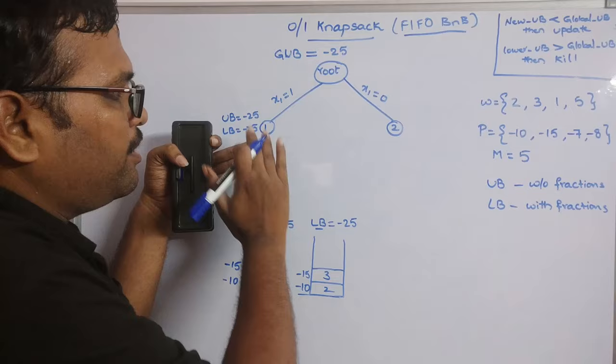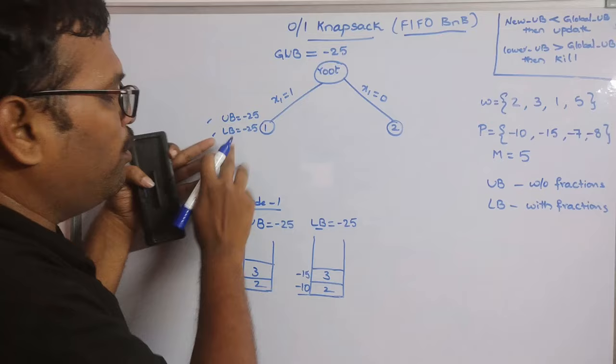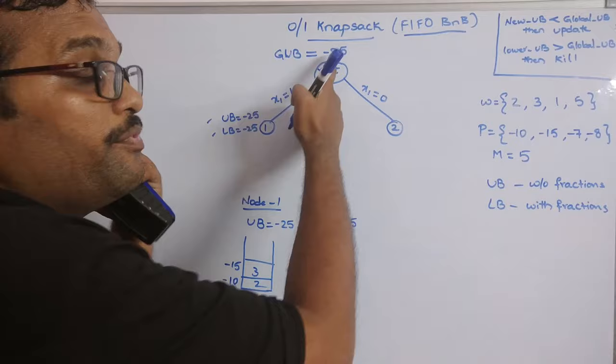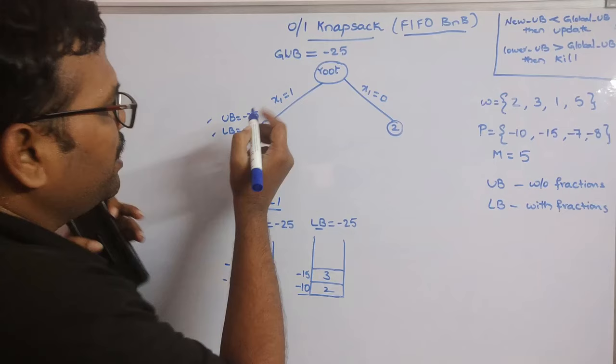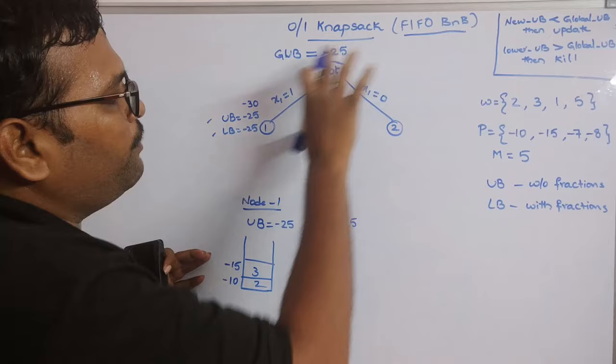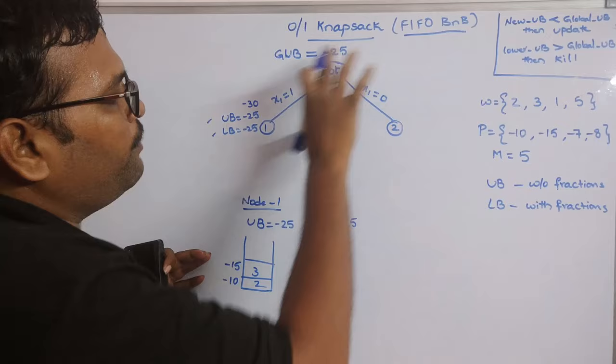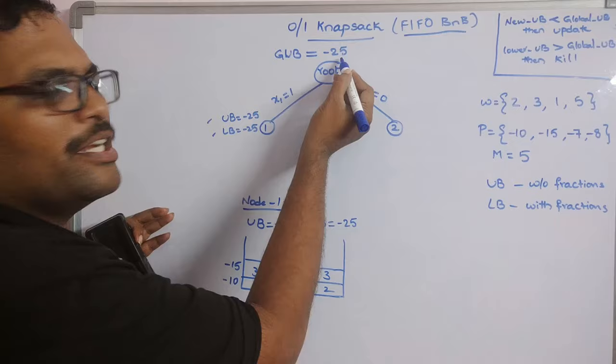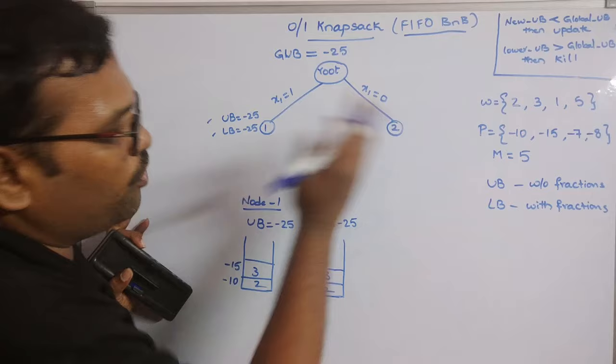For Node 1, check the two conditions. New upper bound (-25) less than global upper bound (-25) → false, no update needed. Lower bound (-25) greater than global upper bound (-25) → also false. So we can expand Node 1. Now move to Node 2.